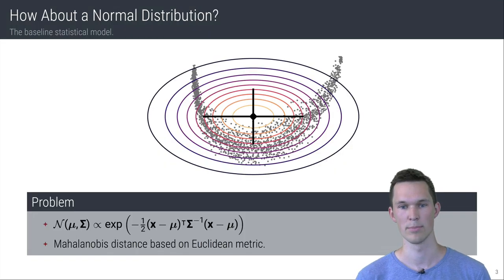A simple normal distribution places the mean outside the data support, and we also see that the eigendirections are not at all well aligned with the intrinsic trend of the data. This is due to the Mahalanobis distance which is based on a Euclidean metric.